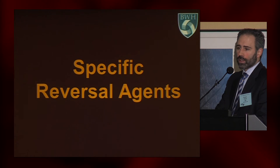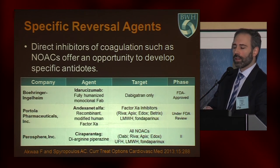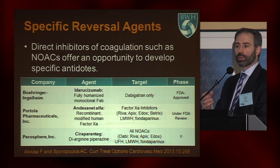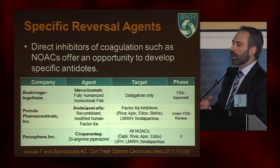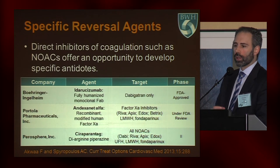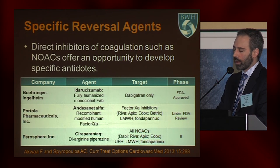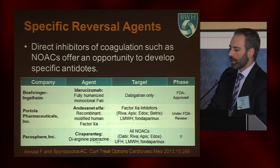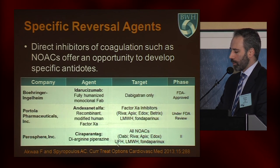We're very fortunate to have specific reversal agents for the NOACs, some of which are FDA approved and some of which are on the way. The fact that these agents are direct inhibitors of coagulation gives us the opportunity to have direct antidotes. For dabigatran, we have idarucizumab, which is a fully humanized monoclonal antibody very similar to thrombin that's FDA approved. Also under FDA review is andexanet alpha, which is a recombinant modified human factor Xa molecule. There's another agent earlier in development called ciraparantag that has the potential to reverse almost all of the anticoagulants in our armamentarium.